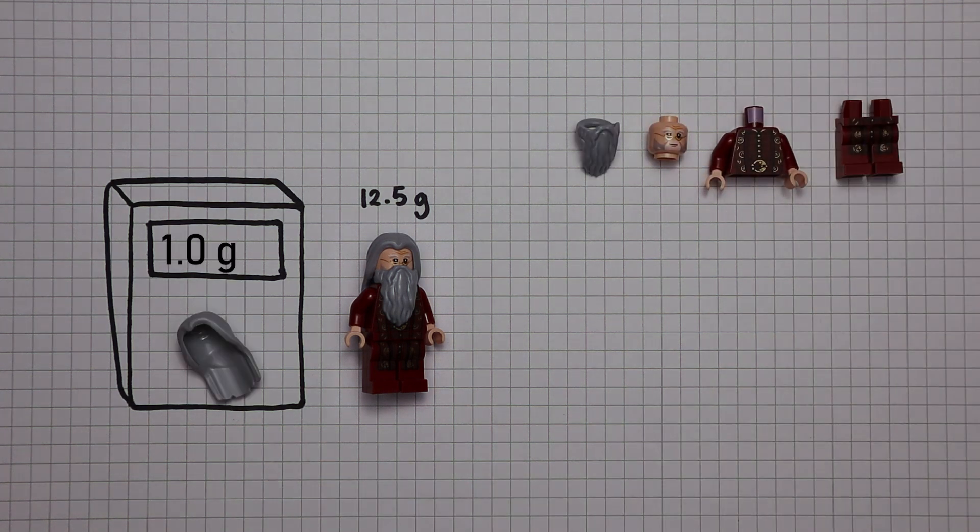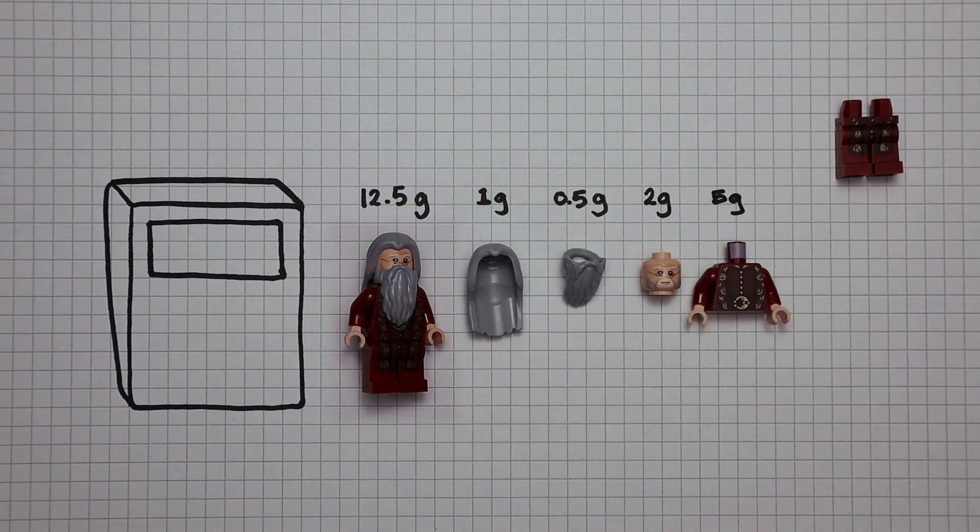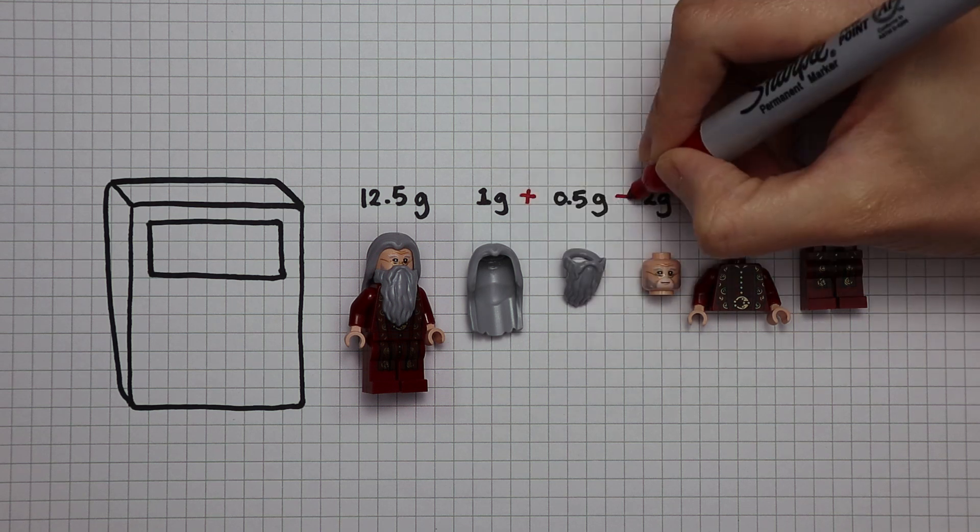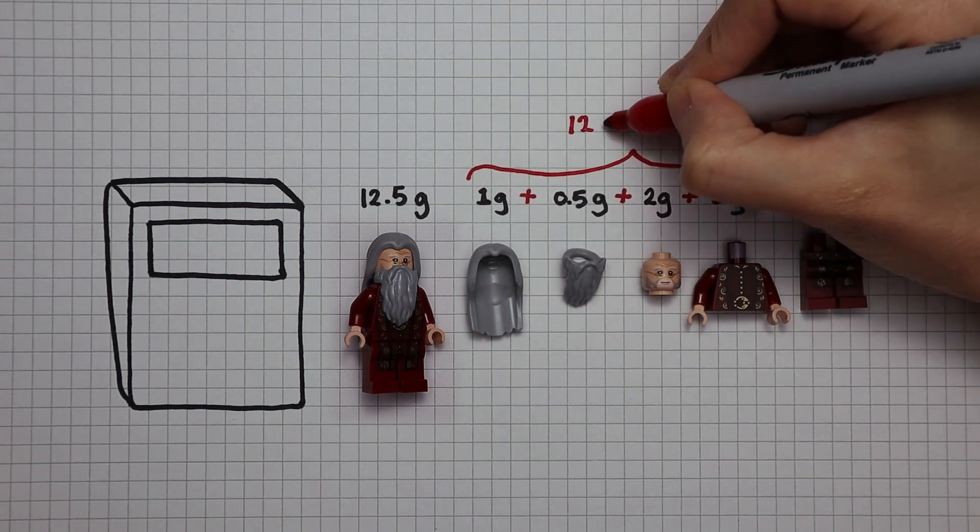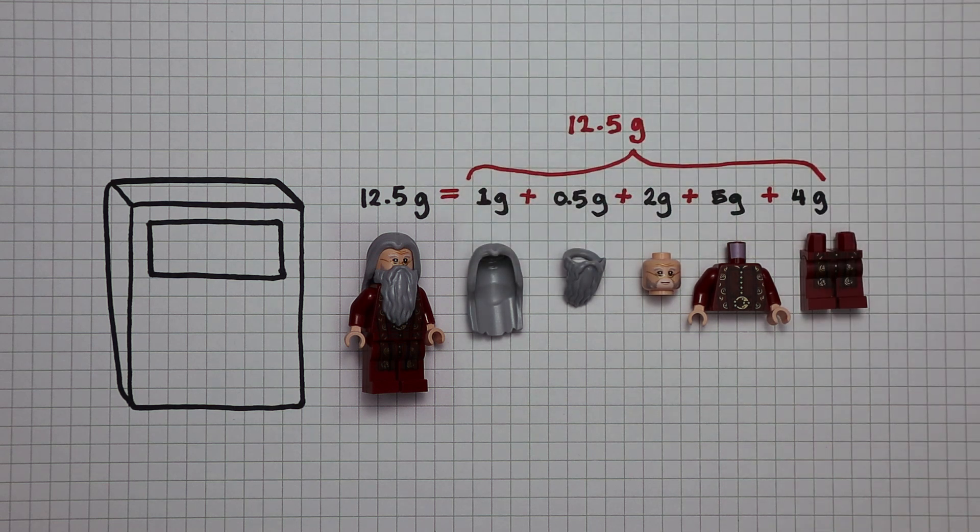Dumbledore's hair weighs 1 gram, his beard is half a gram, his head weighs 2 grams, body 5, and legs 4. It's not so surprising that they add up to 12.5 grams, which is exactly the same mass measured when it was a whole Dumbledore.